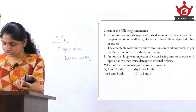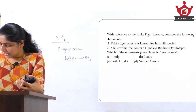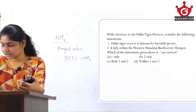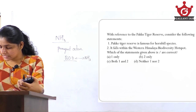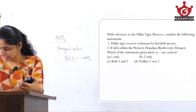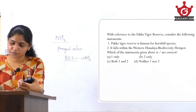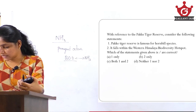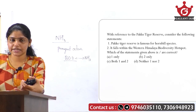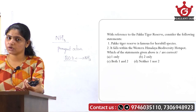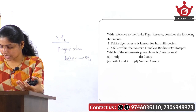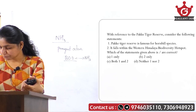Now let's move on to the second question. With reference to Pakke Tiger Reserve, consider the following statements. Statement 1 says Pakke Tiger Reserve is famous for hornbill species. Statement 2 says it falls within the Western Himalayan biodiversity hotspot. Imagine you don't know whether Pakke Tiger Reserve is famous for hornbill species or whether it is situated in the Western Himalayan biodiversity hotspot.